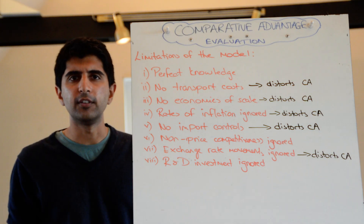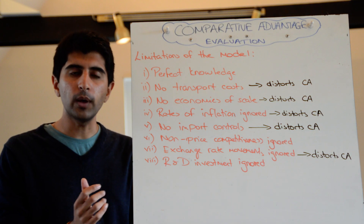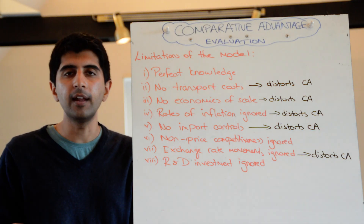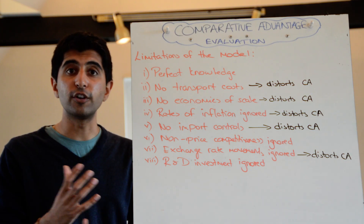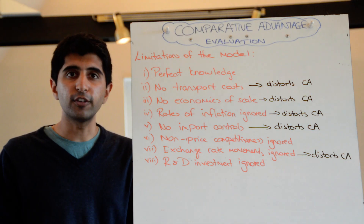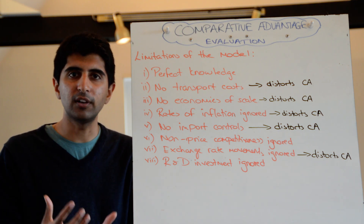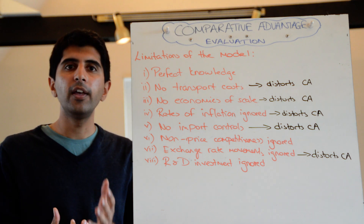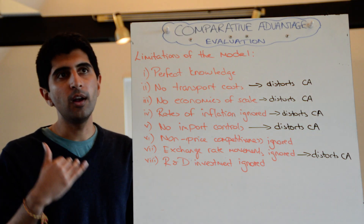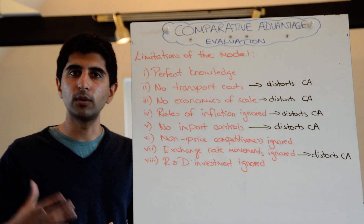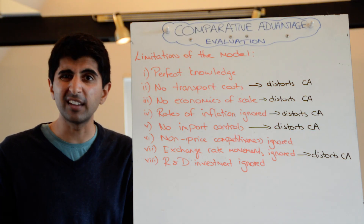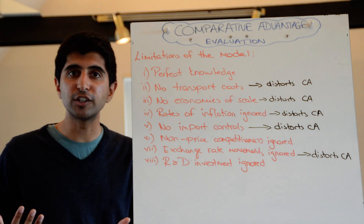What about non-price competitiveness? That's ignored in this model as well. Even though a country may not have the comparative advantage of producing something, it may have benefits for its products in other ways: reliability, brand loyalty, service quality, overall quality, innovation, and technology. These non-price factors may dominate, and even though the price might be higher because this nation doesn't have a comparative advantage, it may still be able to sell in large quantities abroad.